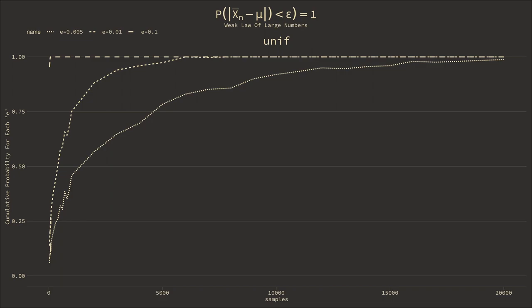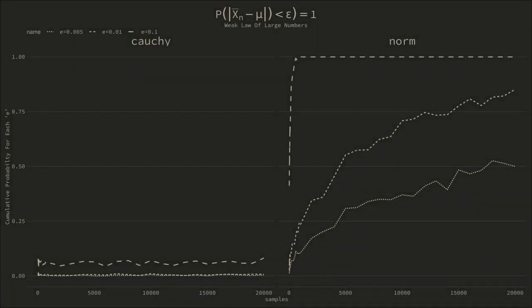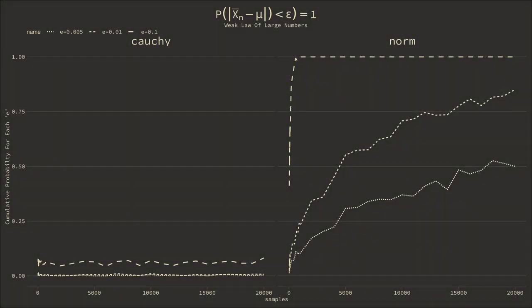This is how things should look. This is how things do look for all distributions. But this is how the Cauchy distribution compares. The probability that the difference in the sample mean and the population is less than the threshold is never 1. And grabbing more samples doesn't change the story.